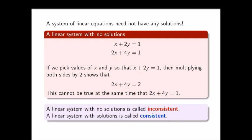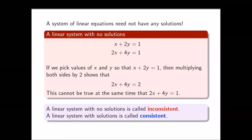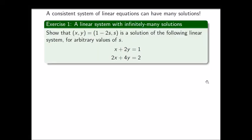A system like this, which has no solutions, is called an inconsistent system of linear equations. If a linear system has at least one solution, we call it a consistent linear system. Sometimes a consistent system can have infinitely many solutions, as we'll see in this exercise.